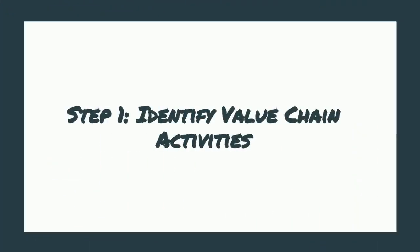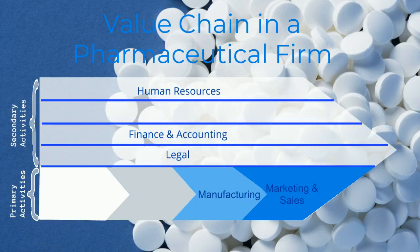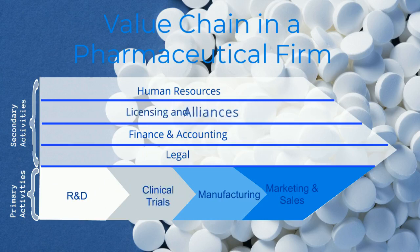Our first step in our value chain analysis is to identify our value chain activities. Not all firm value chains will look the same. For example, in a pharmaceutical firm, the primary activities might start with R&D, followed by clinical trials, and the secondary activities might include things like licensing and alliances.